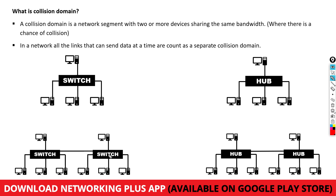Here we have two switches connected to each other, each with four computers. Let's count the collision domains — how many links can send and receive data at the same time? Link one, link two, link three, link four on the first switch; similarly all computers on the second switch can also send and receive data at the same time; and the link between the two switches can also send and receive data simultaneously. Counting all: one, two, three, four, five, six, seven, eight, nine — we have nine collision domains in total.